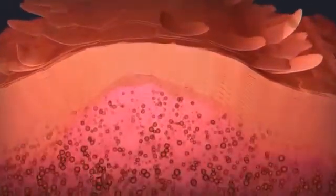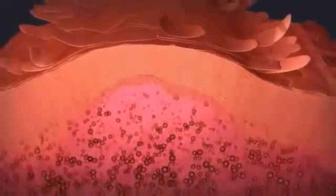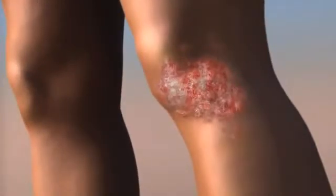New skin cells form and move to the surface too quickly. They build up as the thick, scaly patches on the skin's surface that characterize psoriasis.